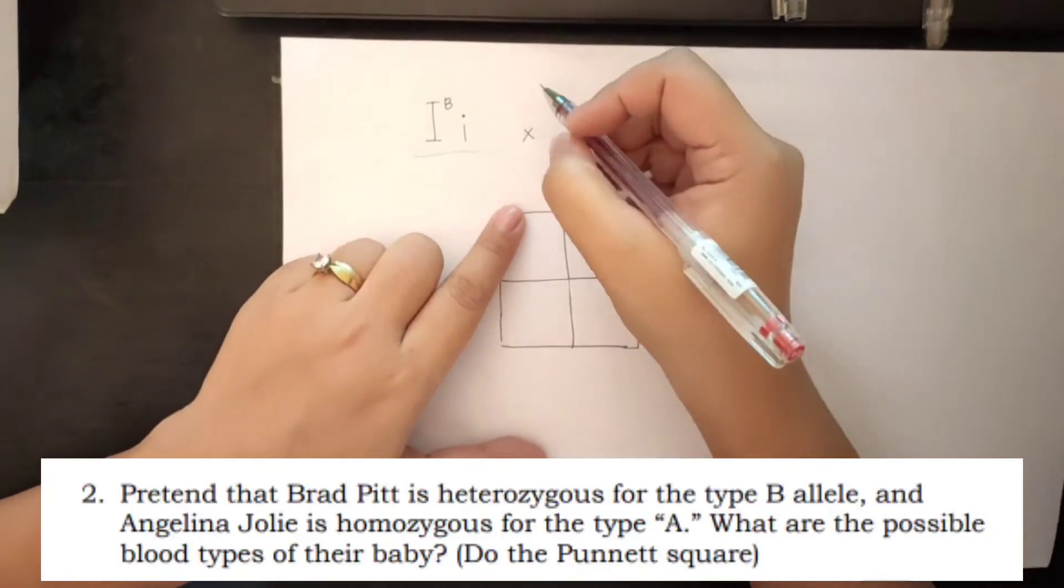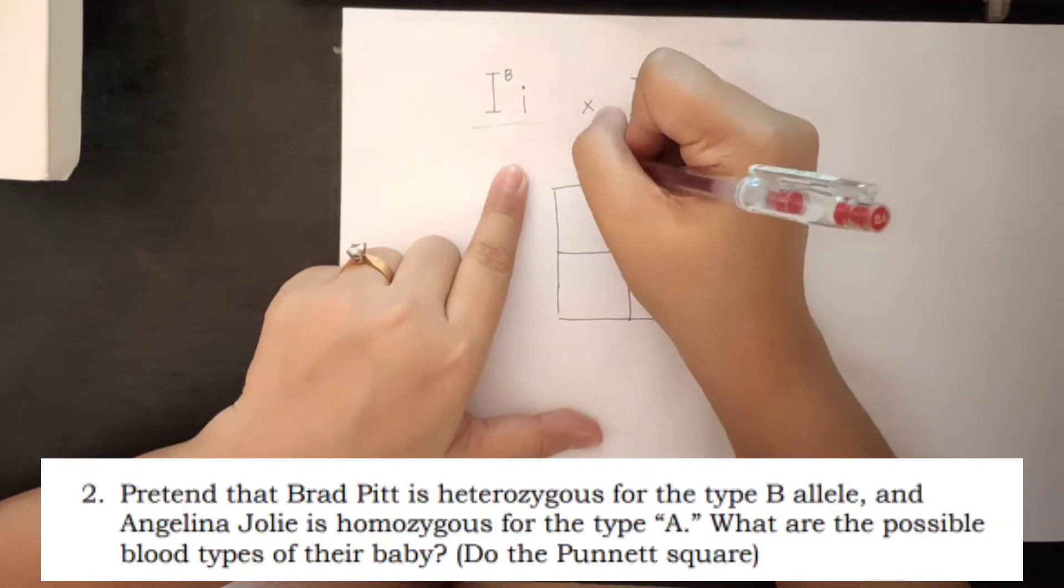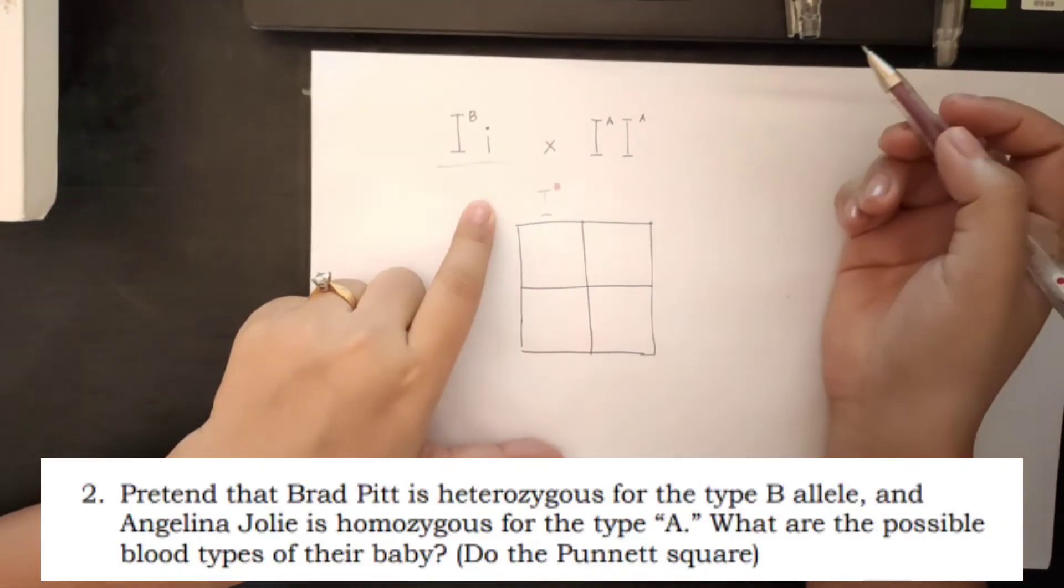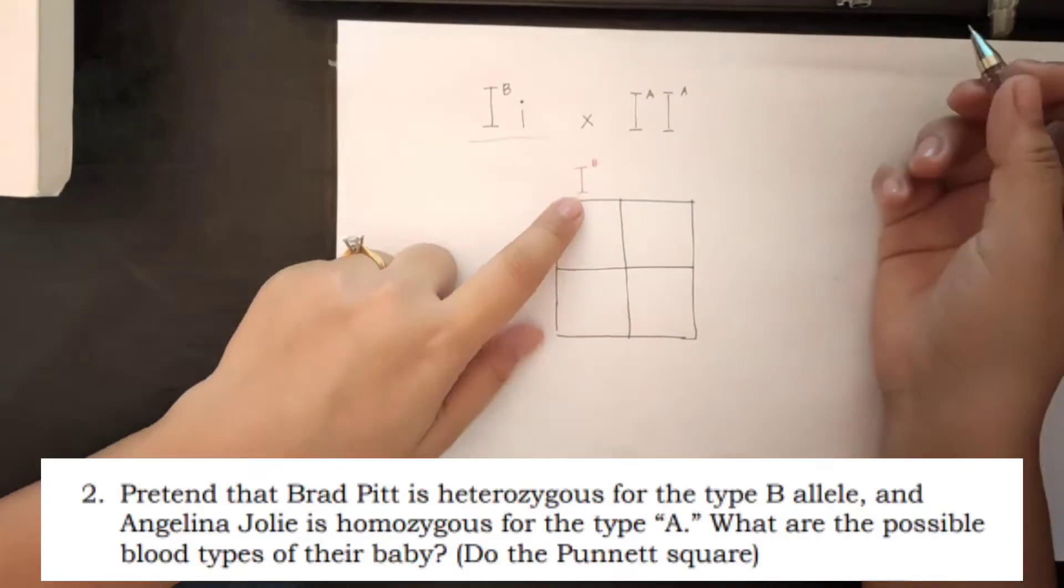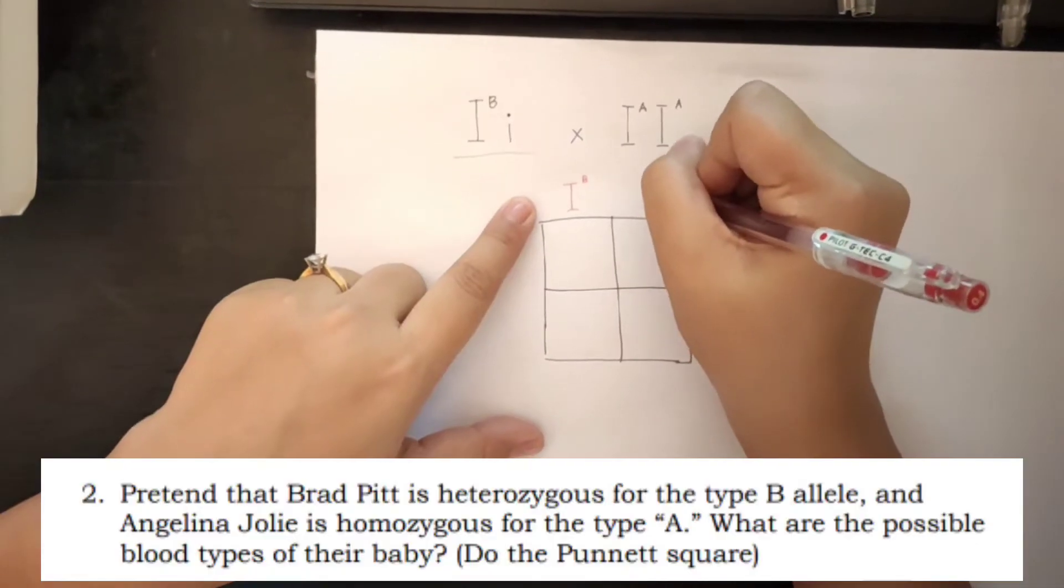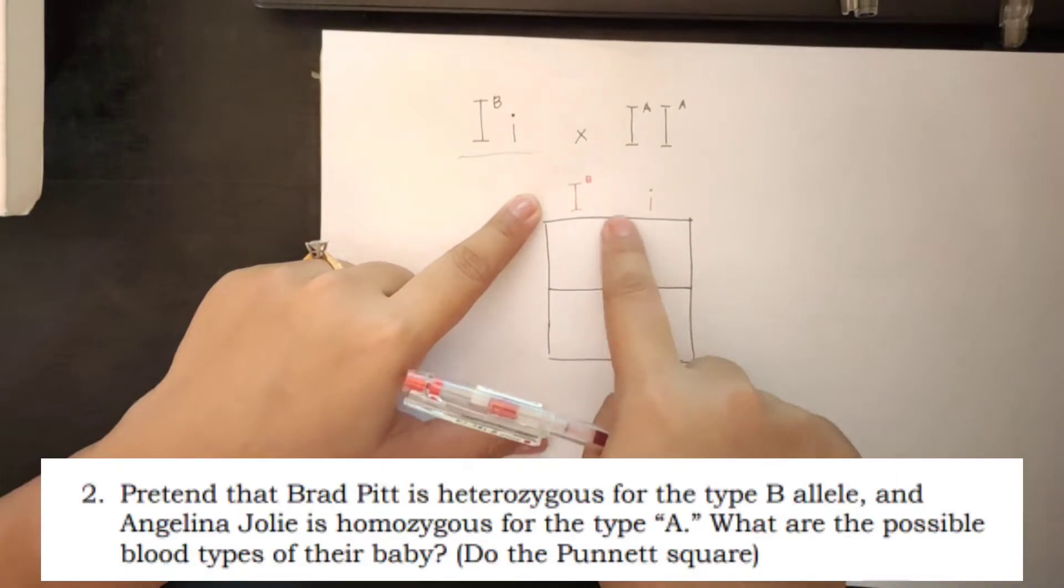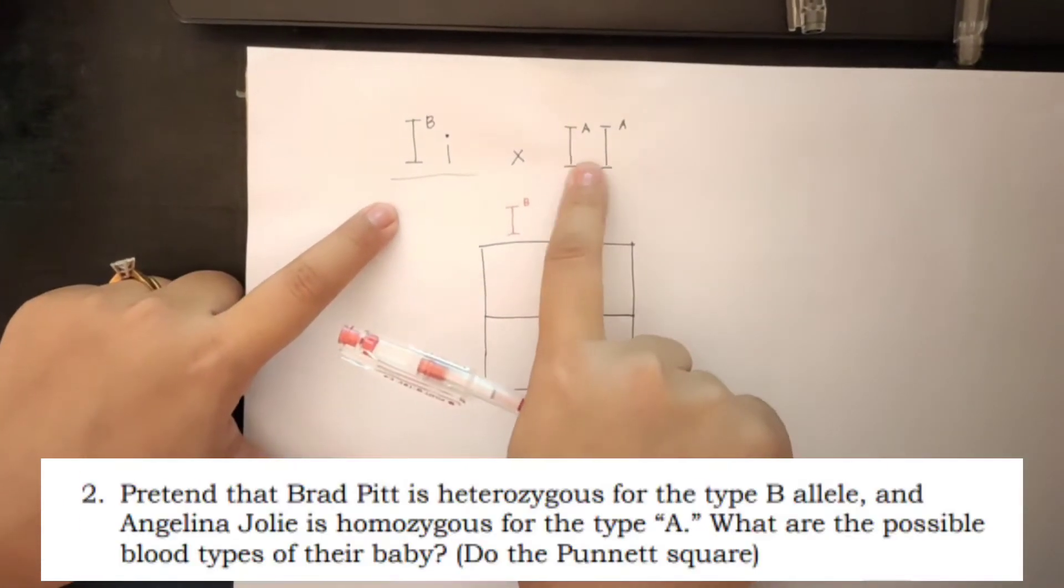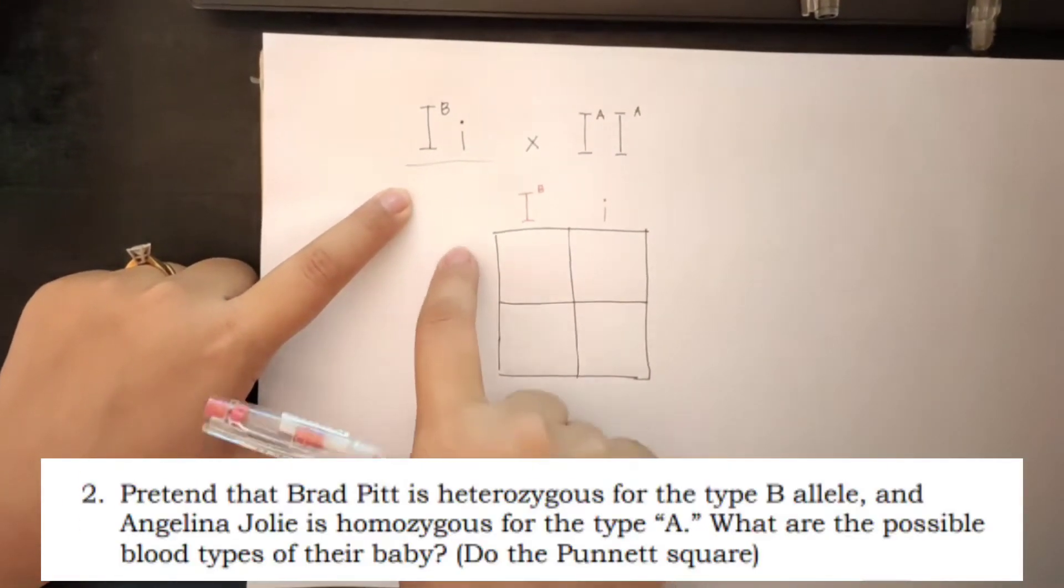This one. So, at the top portion of the Punnett square. Okay, claro ba? Yan. And then, small letter i. This is a heterozygous blood type B. And this one is for this corner.